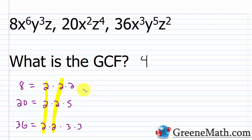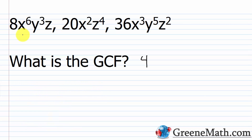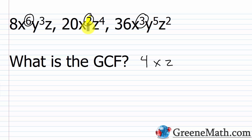For the variable parts: is the variable present in each term, and what's the smallest exponent? You have x in all three terms, with exponents 6, 2, and 3 — the smallest is 2, so x squared goes in. For y, the second term has no y, so y is not going in. For z, all three terms have z, with exponents 1, 4, and 2 — the smallest is 1, so just z goes in. The greatest common factor here is 4x squared z.